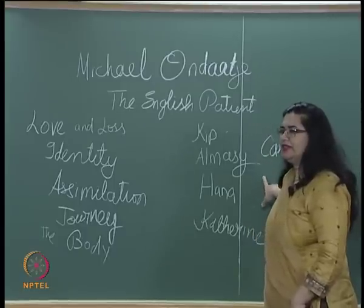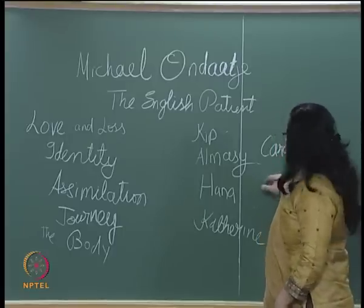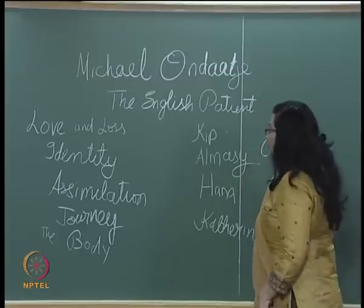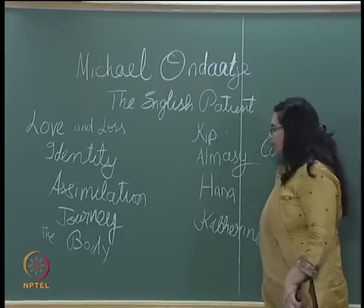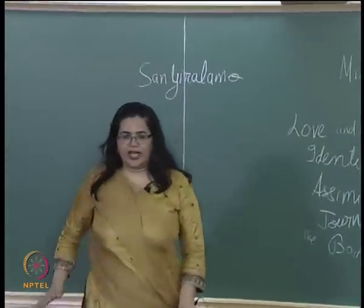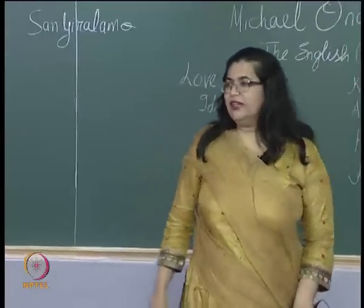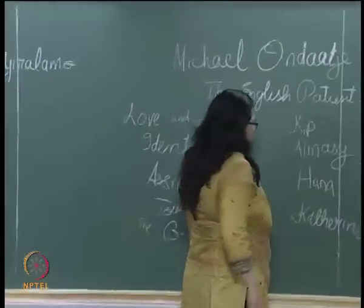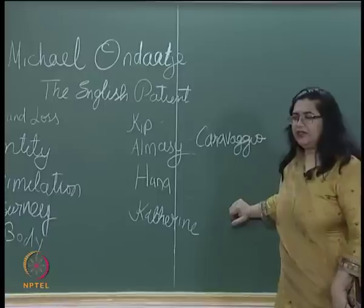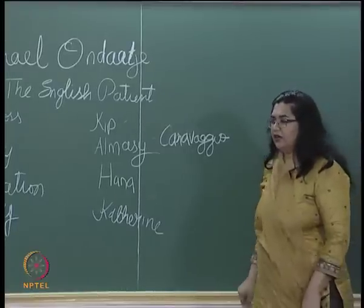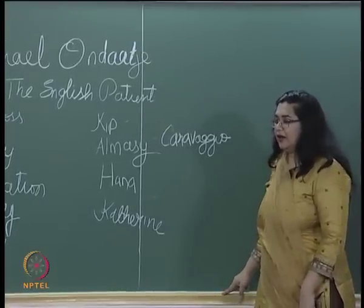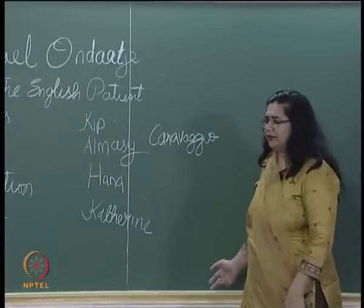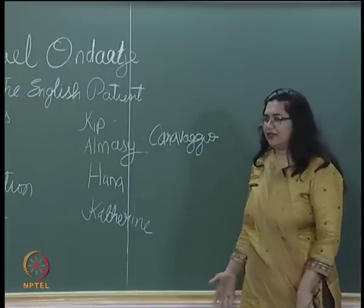The English patient is definitely not an Englishman. Caravaggio, an international thief and spy who could break into anyone's house, steal documents and secrets, was captured by enemies during the Second World War. As punishment, they cut off both his thumbs — making him the thumbless man. Having lost his thumbs, he can no longer practice his craft of stealing, so he has been punished in such a way that he cannot do what he is best at.